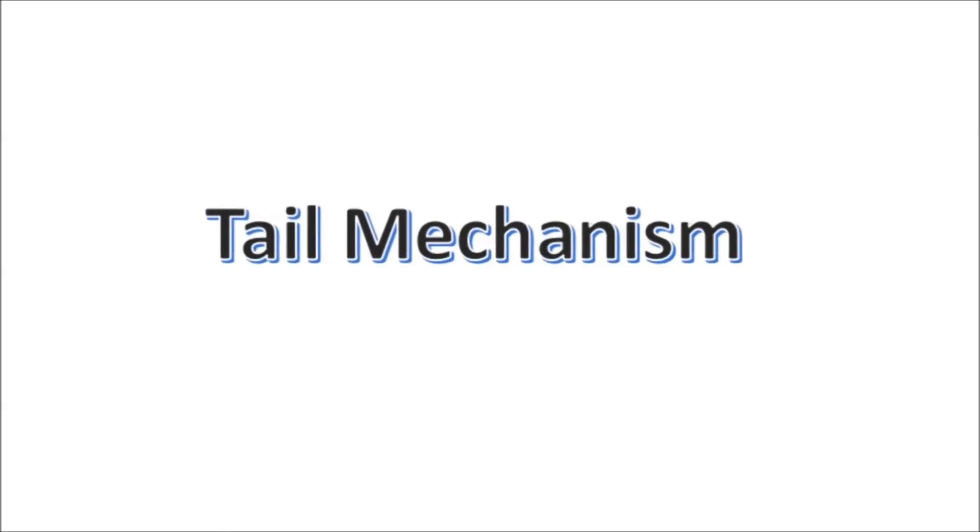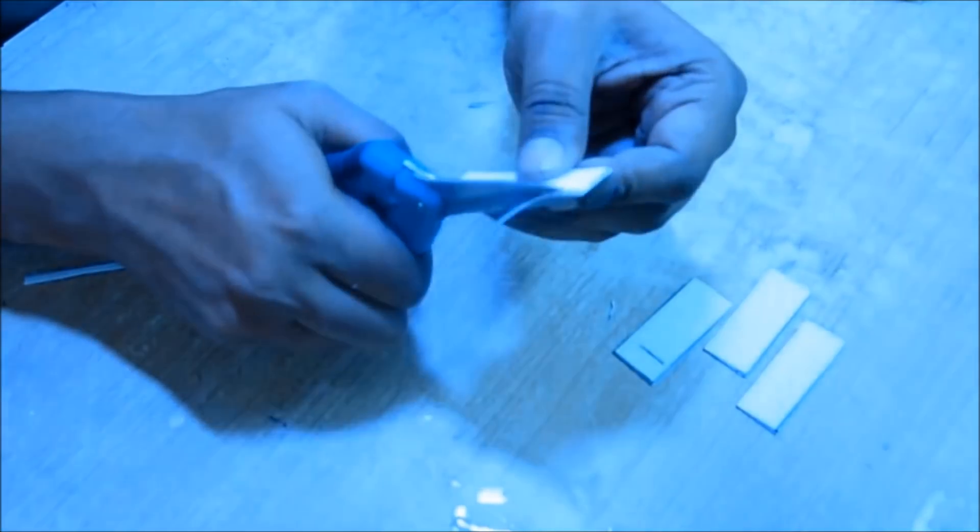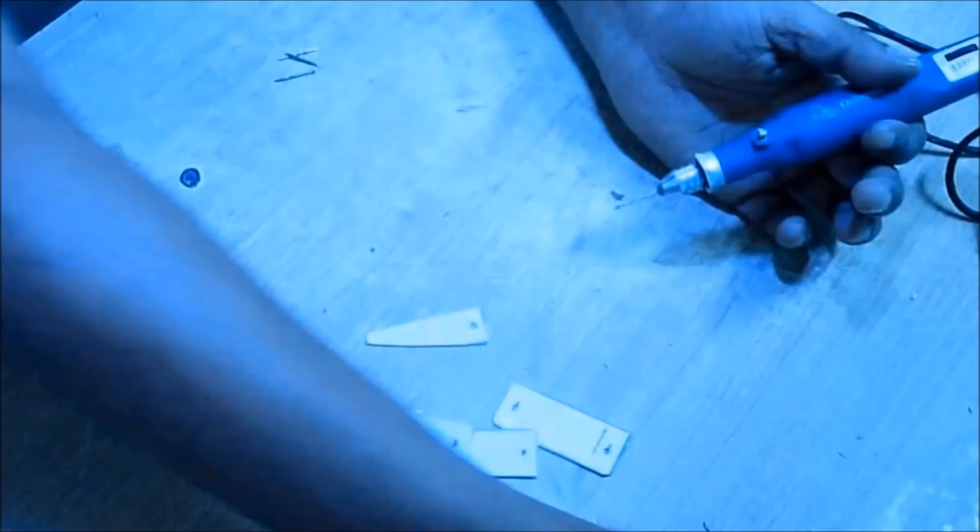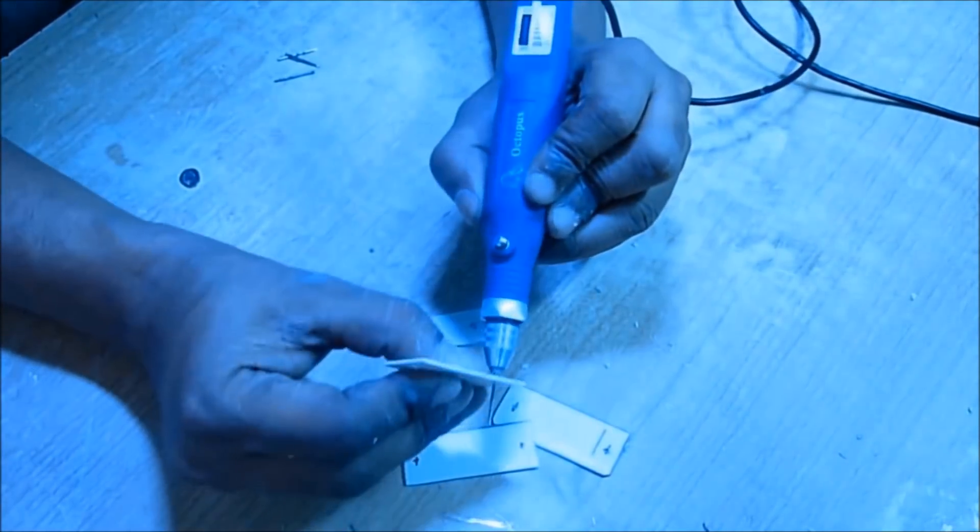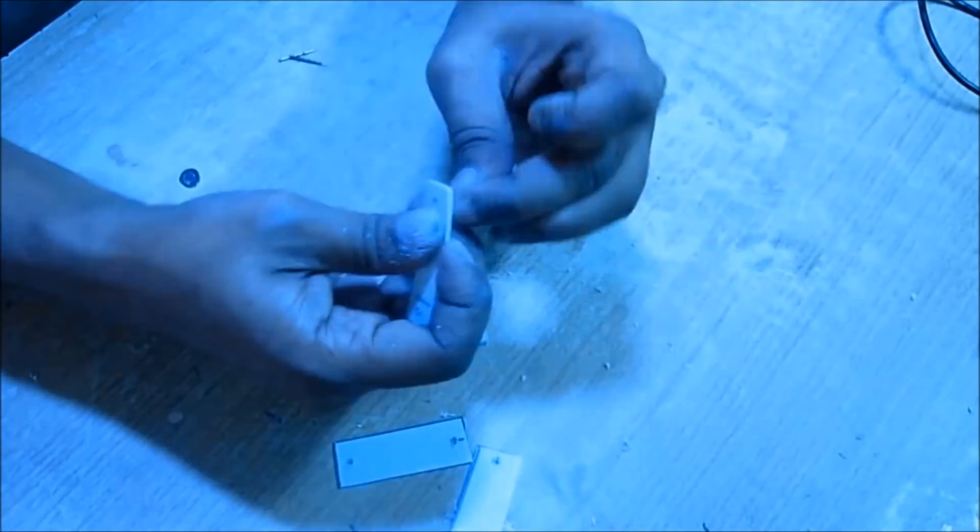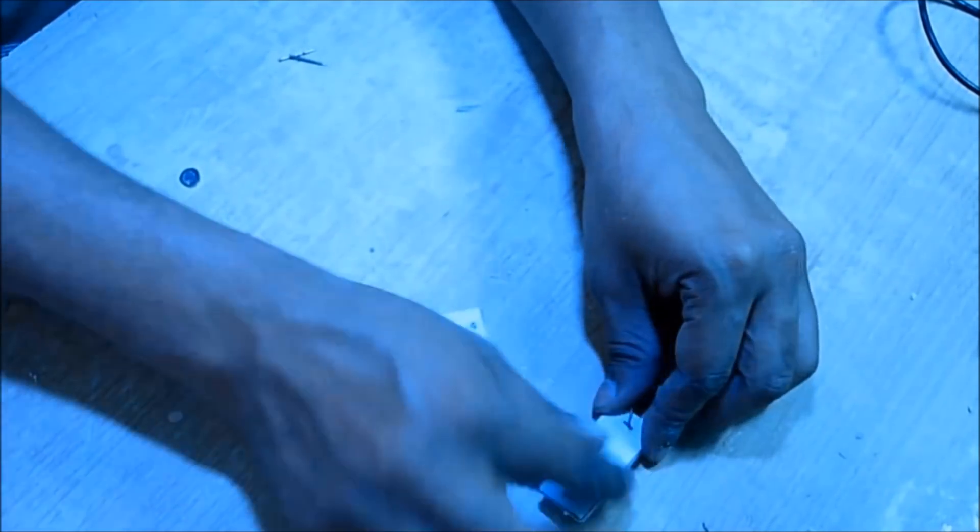Now we will make the tail mechanism. For this you need to cut four pieces of plastics. Dimensions are given on the screen. For each part you have to drill two holes. Now you need three pins. Pass each pin through every one part.